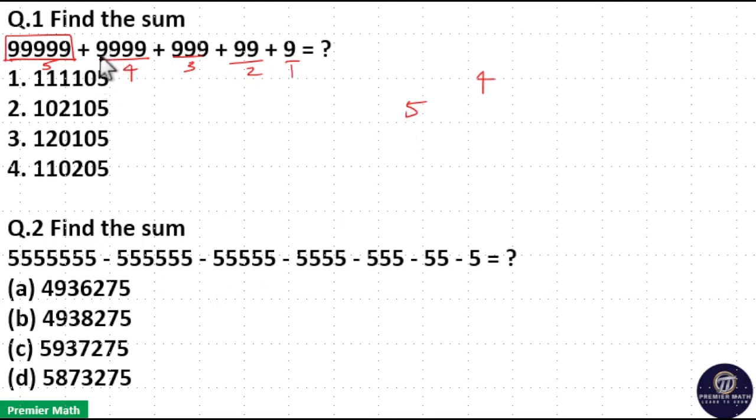Now take the second largest number which is 9 repeated 4 times. So 9 into 4 is 36. 36 plus 4 is 40 remaining 4.